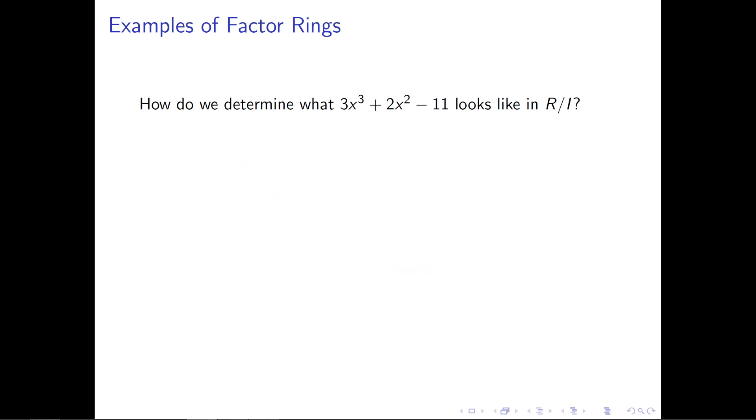Now that's the really heavy theory. That's the theory behind what we're doing. Now let's actually do it with a specific example to make us feel a little bit more comfortable. So let's take a look at something. Here's a polynomial with real coefficients, 3x cubed plus 2x squared minus 11. And let's figure out what this looks like in the factor ring R mod i.